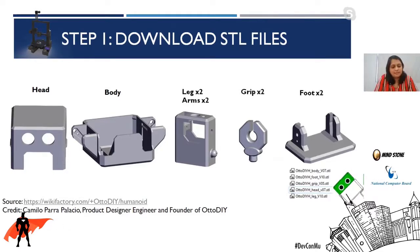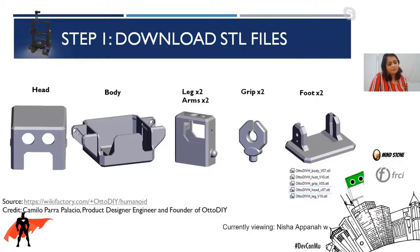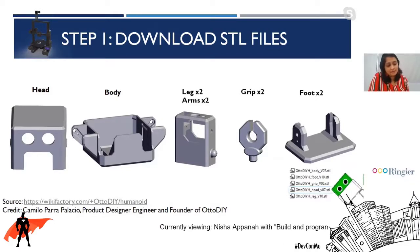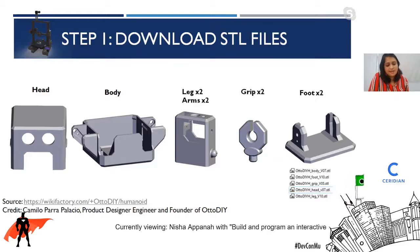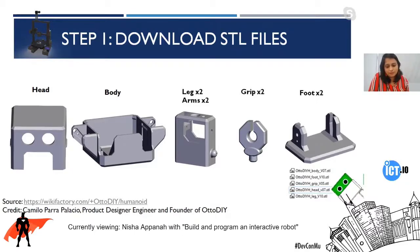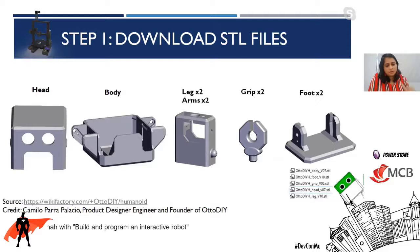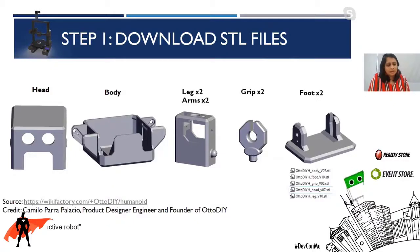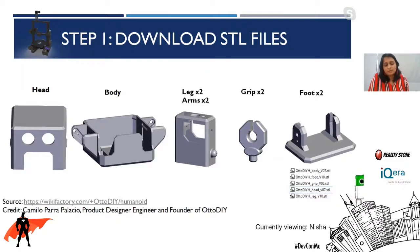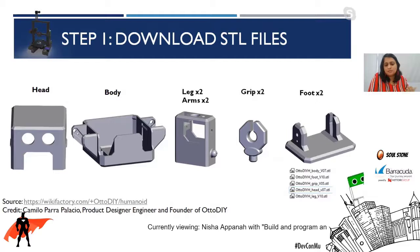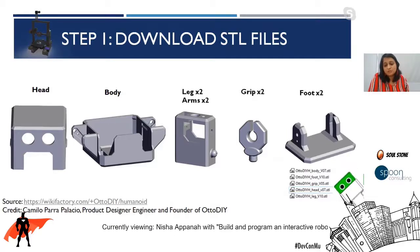First you have to download the STL files. Credit where it's deserved — the person who created those STL files is Camilo Para Palacio, a product designer and founder of Otto DIY. The link is at the bottom, which is on Wiki Factory. When you go to that link you'll see you have access to five STL files: one for the head, one for the body, one for the legs and arms (you print it four times since there's just one STL file for those four items), one for the grip (print this twice), and one for the foot.